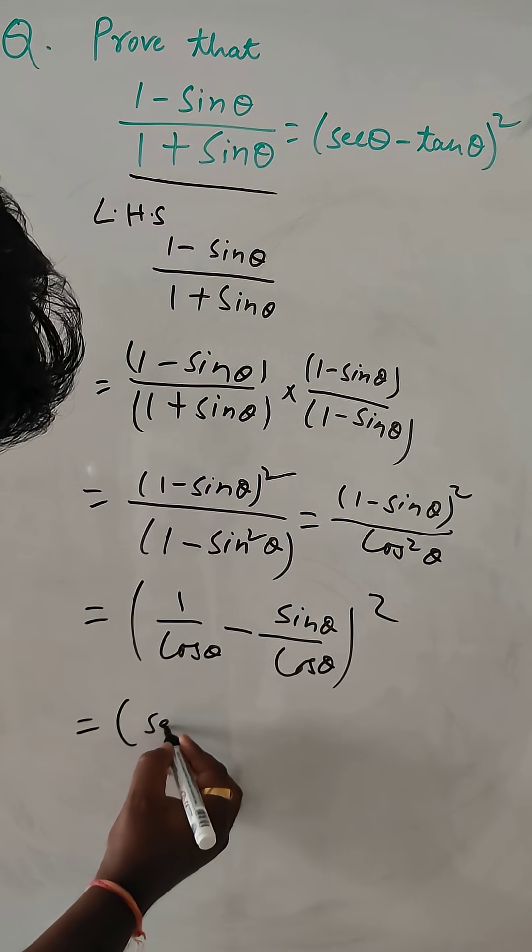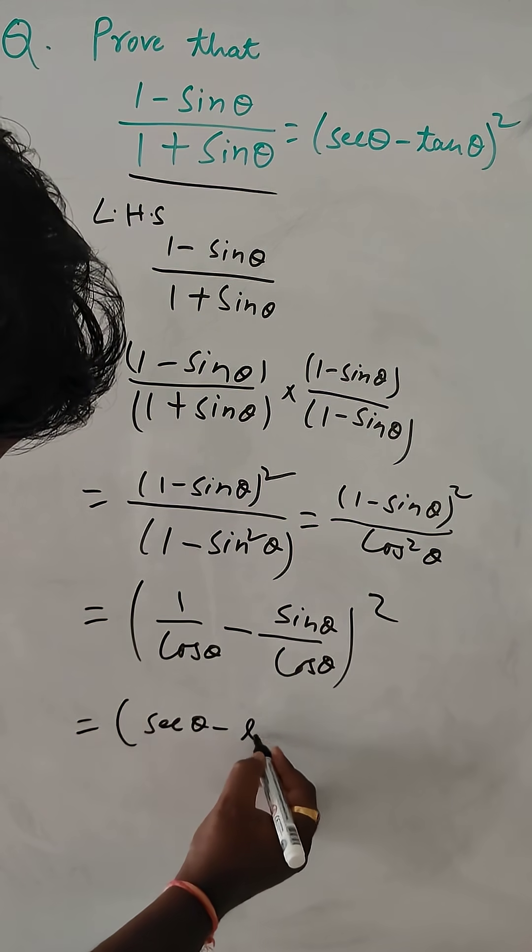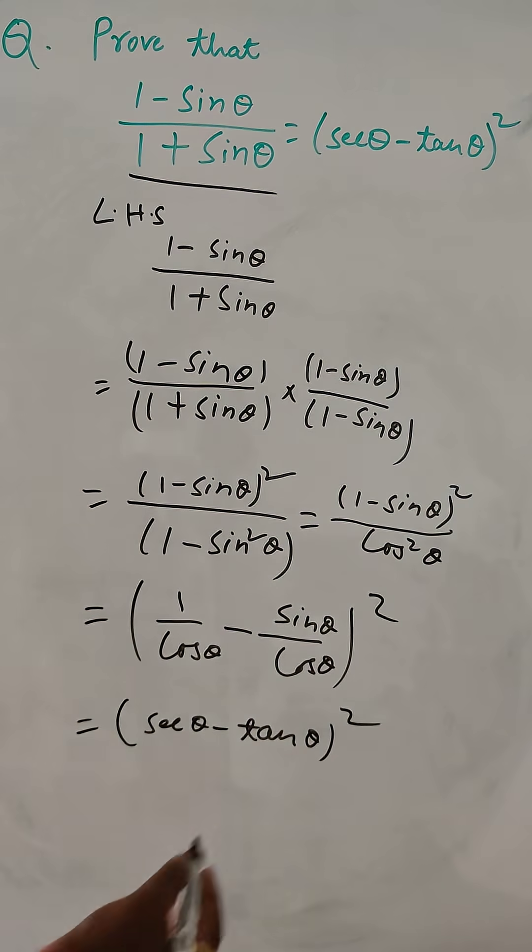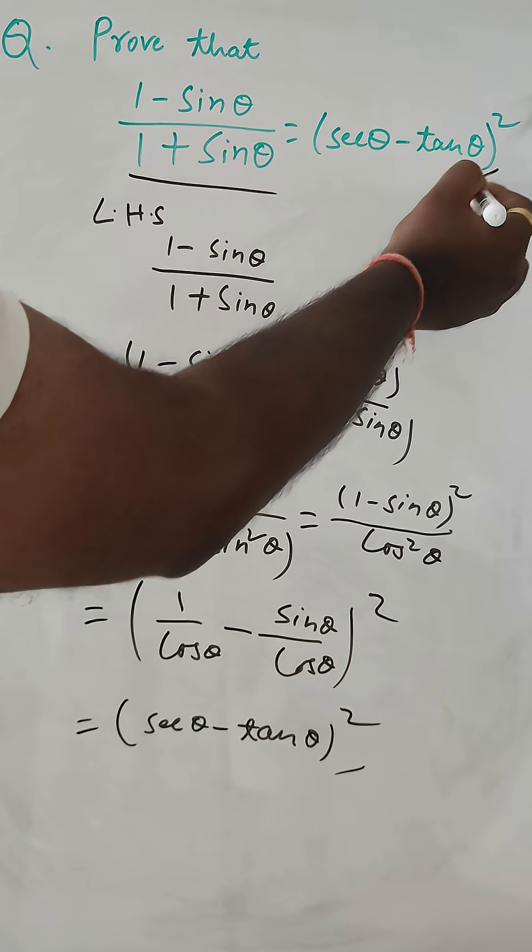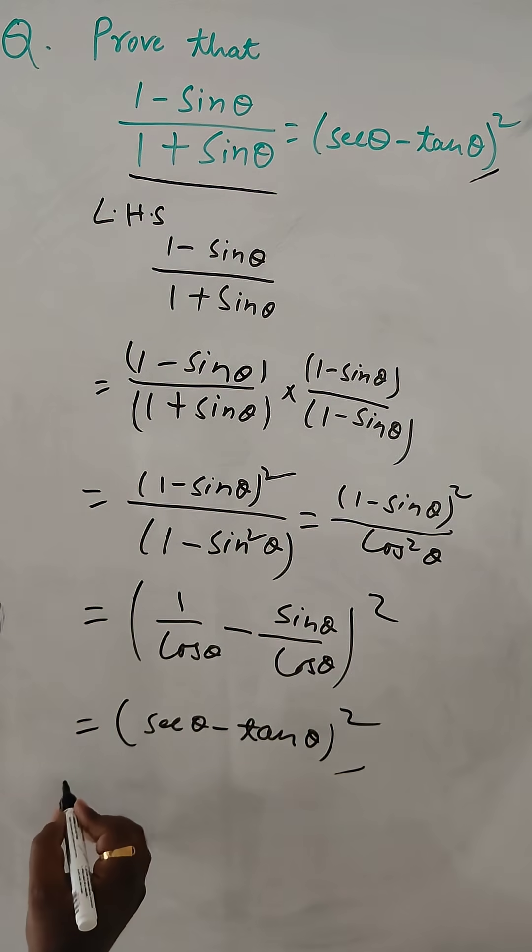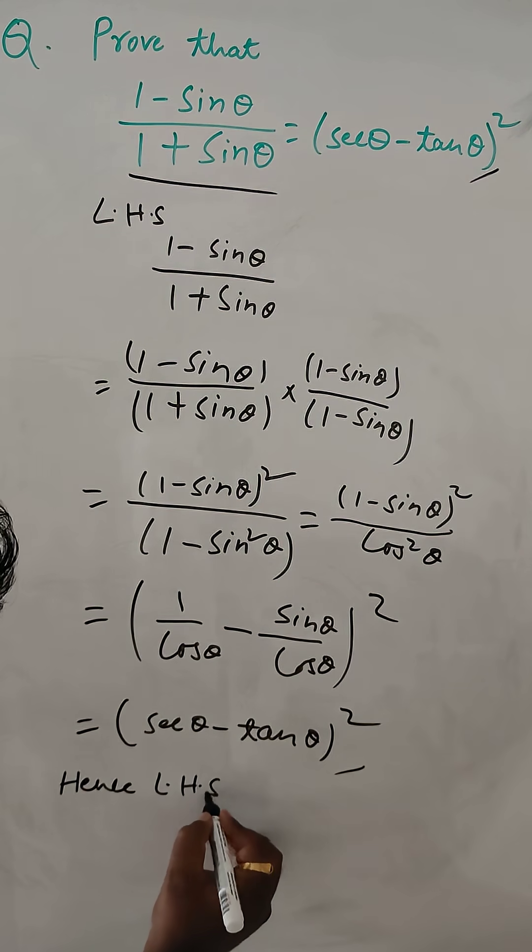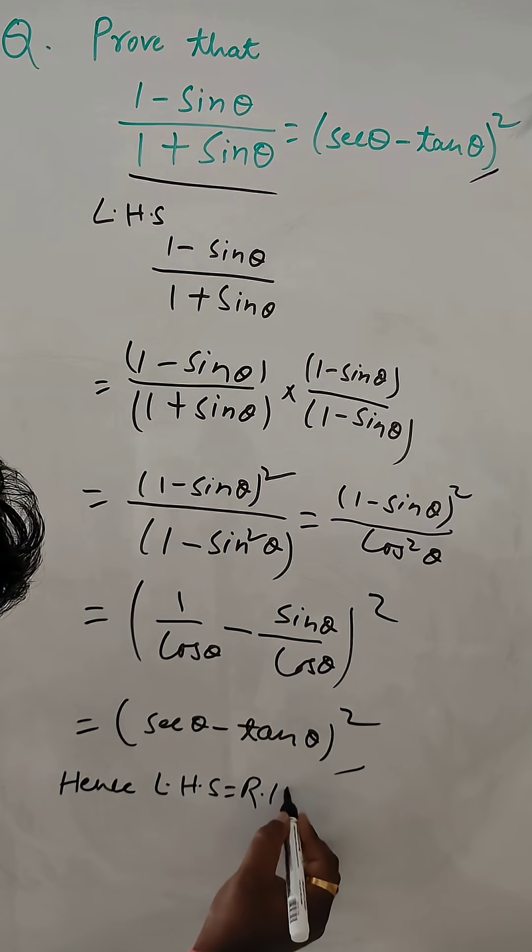So, this is sec theta minus tan theta whole square. So, this is what RHS we have. Hence LHS is equal to RHS.